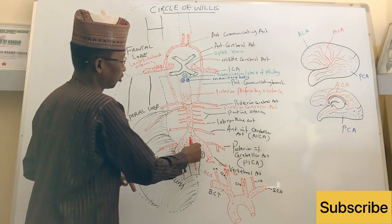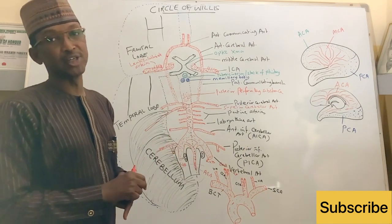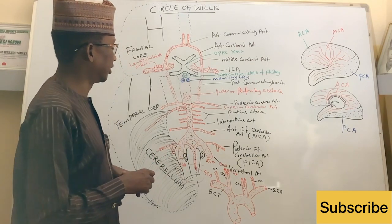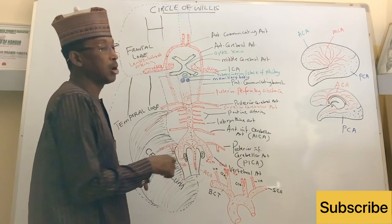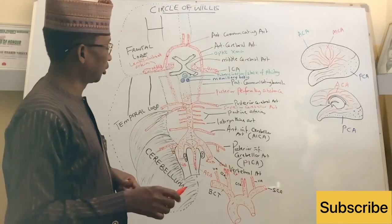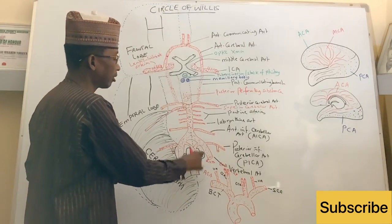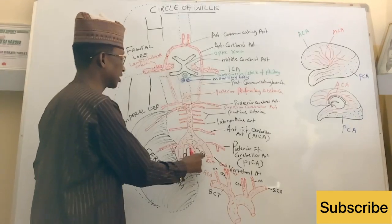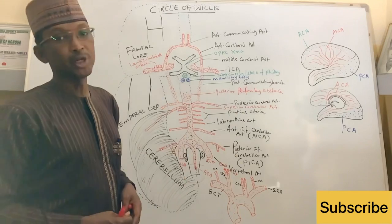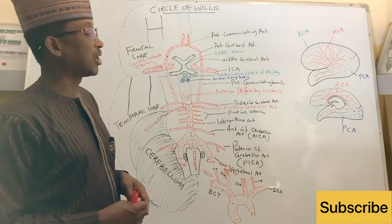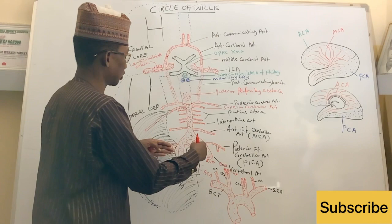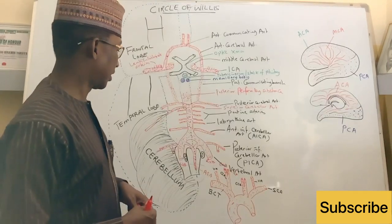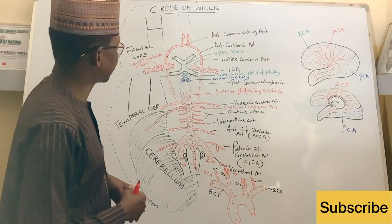The two branches form a single anterior spinal artery that lies within the anterior median fissure of the spinal cord. So the anterior aspect of the spinal cord is supplied by a single anterior spinal artery, while posteriorly, the posterior part of the spinal cord is supplied by the two posterior spinal arteries coming from the posterior inferior cerebellar arteries.